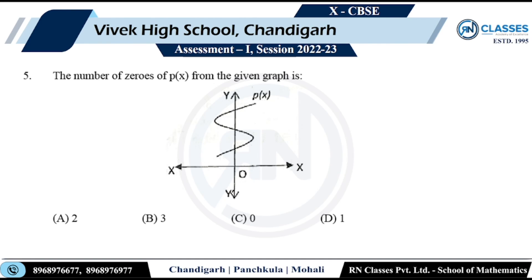The question asks for the number of zeros of p(x) based on a graph. Since no markings indicate whether the graph continues, I am assuming it does not continue beyond what's shown. Since the graph does not intersect the x-axis, there are no zeros. However, this depends on interpretation — you should ask your teacher whether the graph was meant to continue, as otherwise it is an ambiguous question.